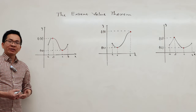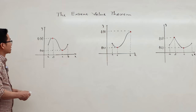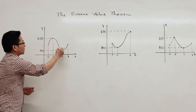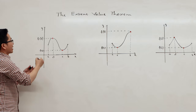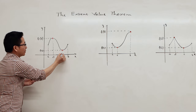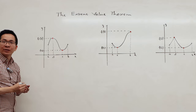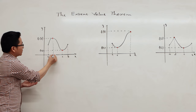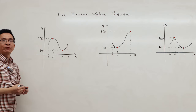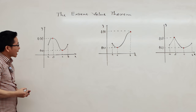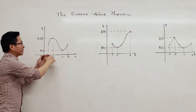Now I'm going to use some figures to illustrate the extreme value theorem. In the first figure, this is the graph of a continuous function on the interval ab. Here, f has an absolute minimum at c, and f of c is the absolute minimum value. f has an absolute maximum at d, and f of d is the absolute maximum value. Notice that in this case, both c and d are in the open interval ab.